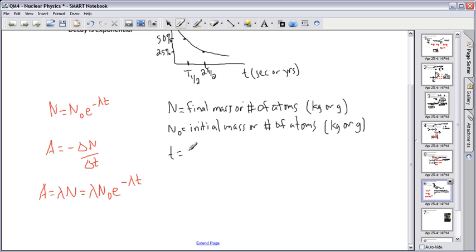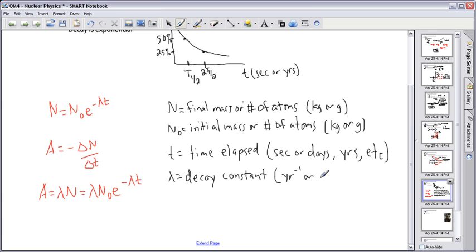t is a time elapsed, the time that has passed. And that can be in either seconds, sometimes they do it in days, years, whatever they decide to use. They might do it in minutes, so who knows. We're also going to need to know lambda, which is a decay constant. I'll be explaining more about that later. Decay constant. This will be measured in either years to the minus one, or day to the minus one, or second to the minus one, et cetera.